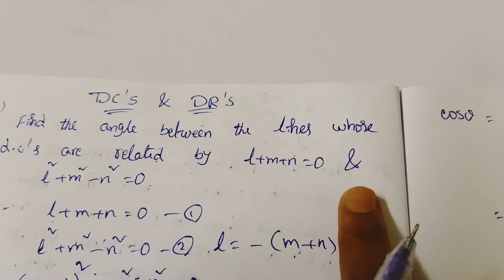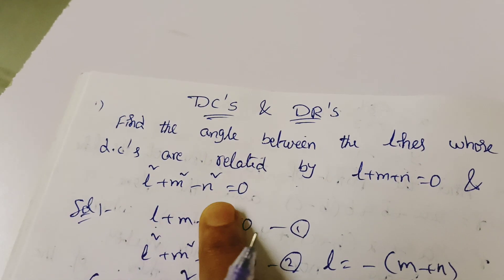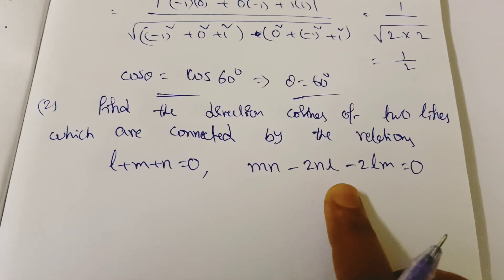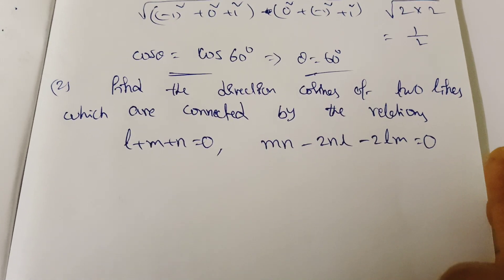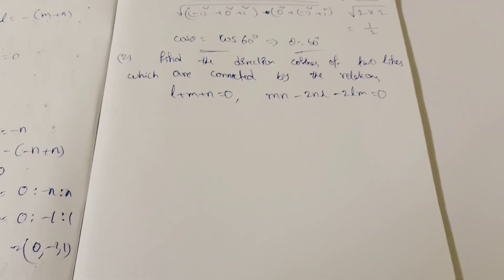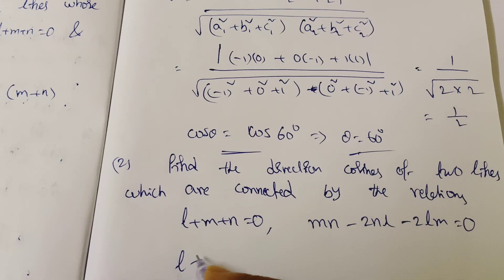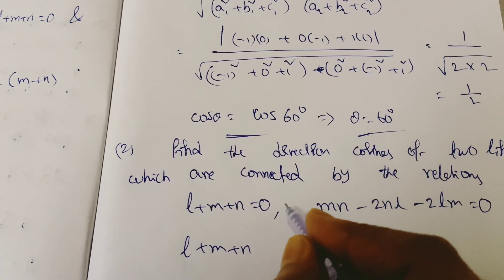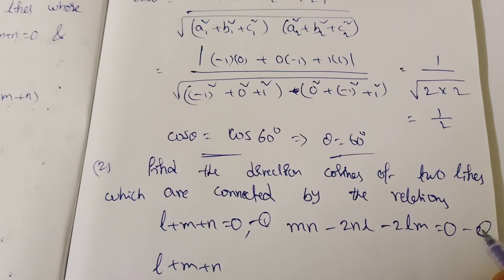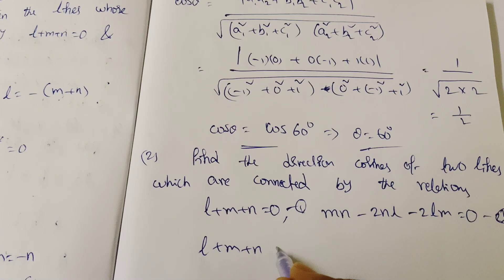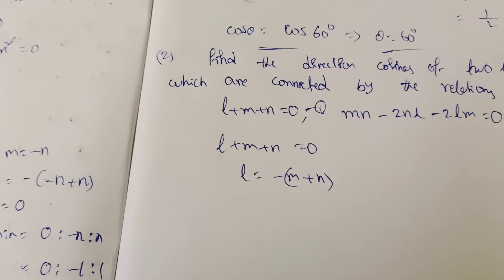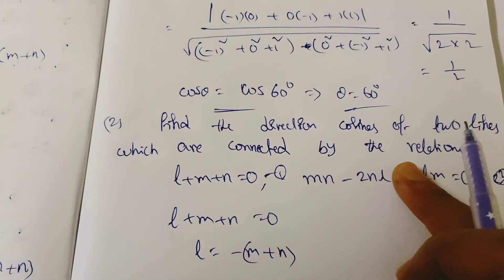From the first equation L plus M plus N equal to 0, we write L equal to minus M minus N. We substitute this value into the second equation MN minus 2NL minus 2LM equal to 0.